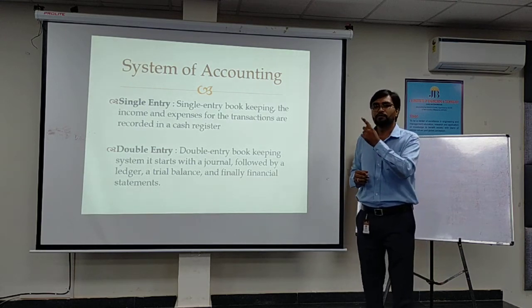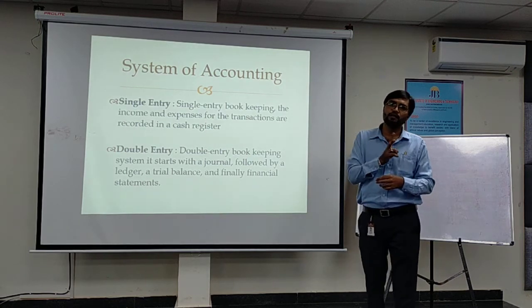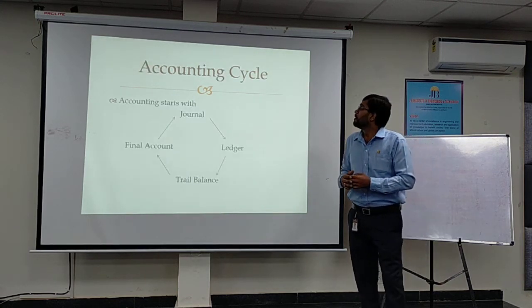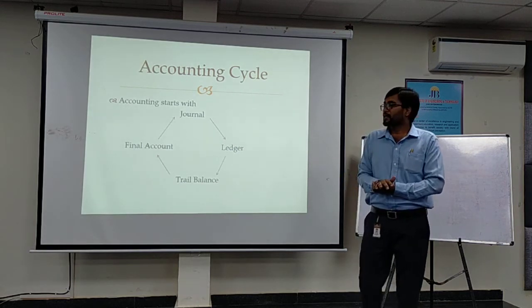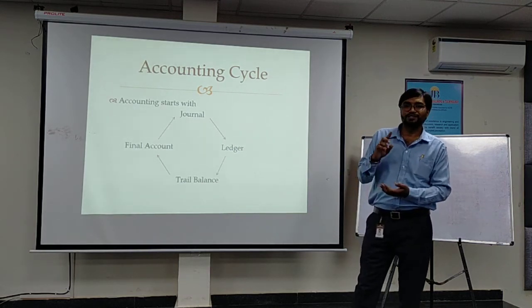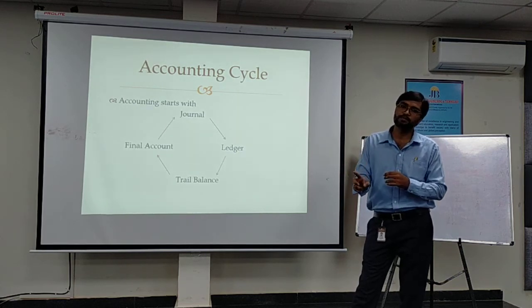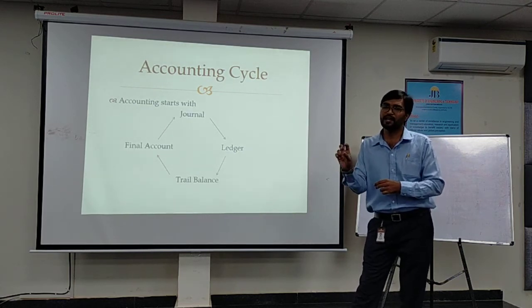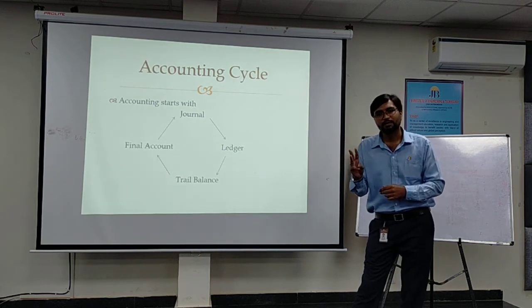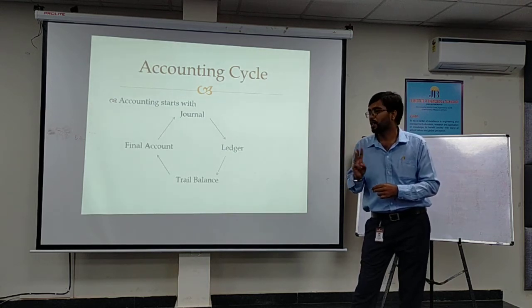In the double entry system, the procedure is: first journal, then ledger, then trial balance, then final account or final statement. The accounting cycle starts with the journal, then goes to the ledger, then the trial balance, then the final account — that is the financial statement — which has three parts: trading account, profit and loss account, and balance sheet.